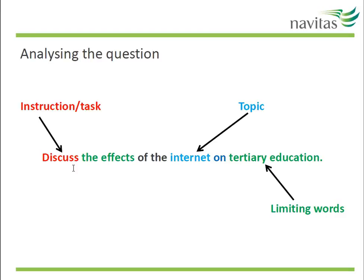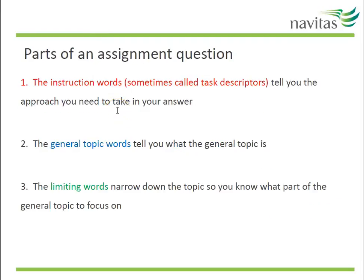Next, consider the general topic words. These words indicate the overall subject matter of the assignment — in this case, the internet. Lastly, look at the words which limit the areas that you have to consider. These limiting or focus words help you to narrow down the scope. Instruction words give you the information about the approach you need to take in your answer. The general topic words indicate what the general topic is and the general scope of the assignment. The limiting words will narrow down the scope of the topic so you know which part of the general topic to focus on.